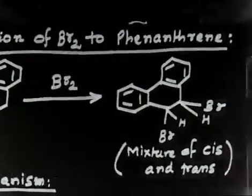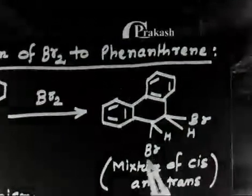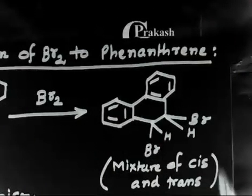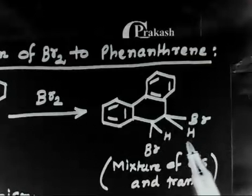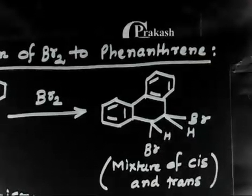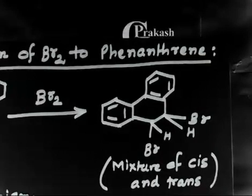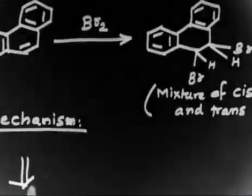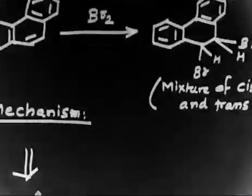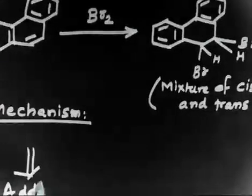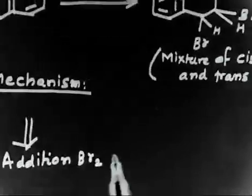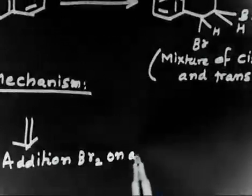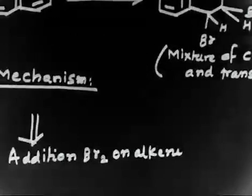Now, the important point in writing the mechanism is that bromine is added cis as well as trans. In some product both bromines are in the cis position, and in some percentage the bromine is in the trans position. If you remember addition of bromine on an alkene, addition of Br₂ on an alkene — in that case addition is always trans.